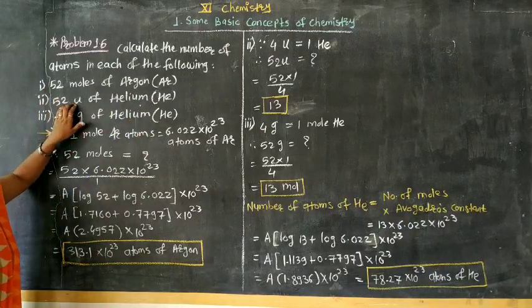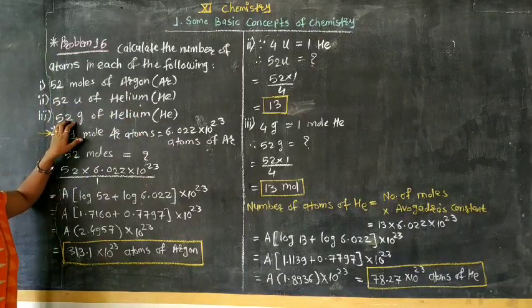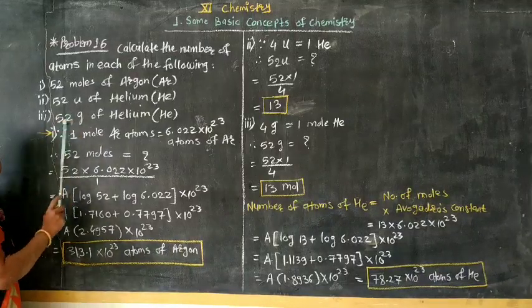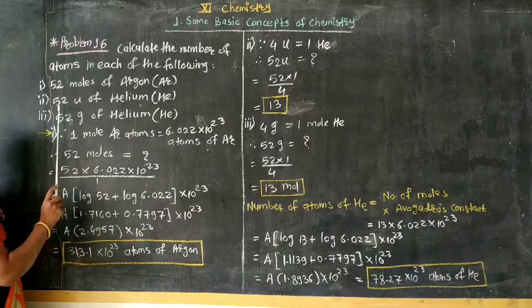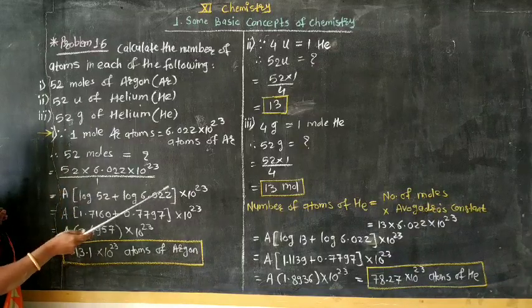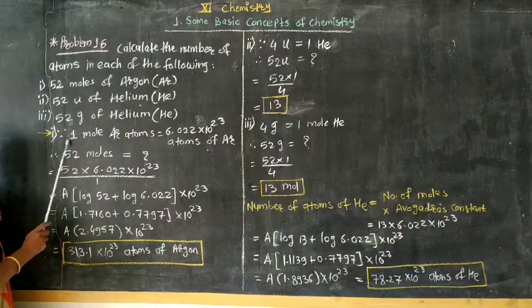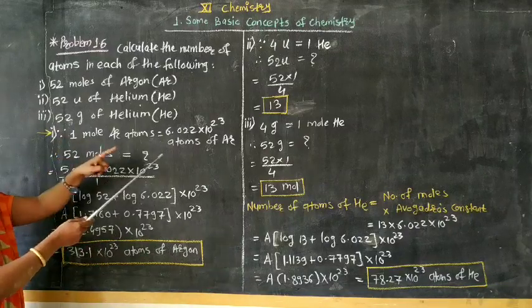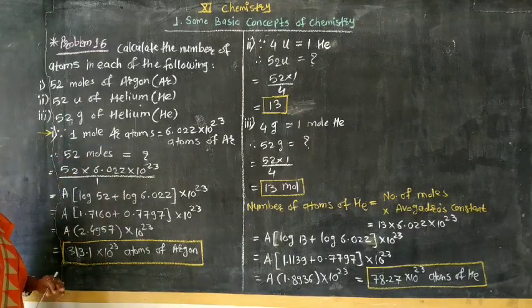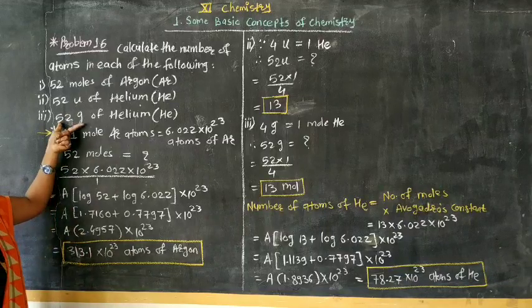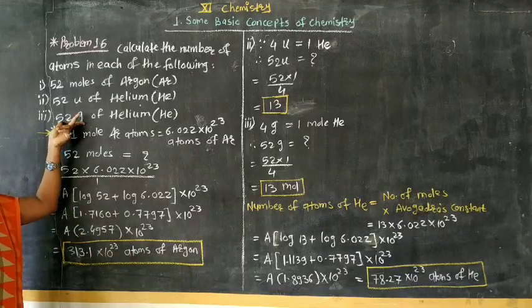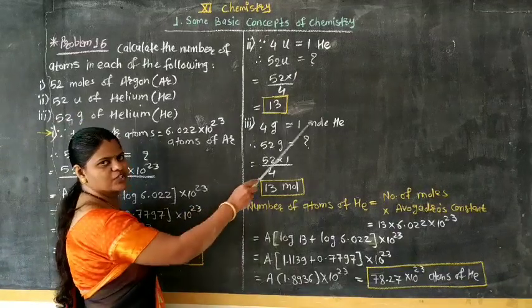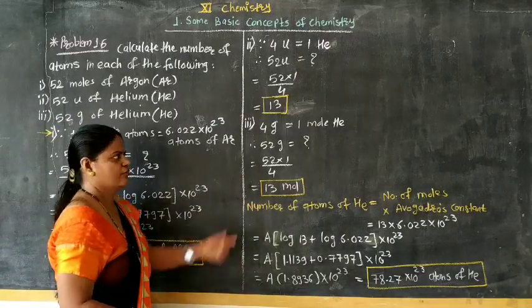But now, whenever that mass is given in gram, at that time first of all convert the gram, given gram atomic mass, into number of moles and then use the same relation as like this: mole to molecule. 1 mole corresponds to Avogadro's number of molecules. So first of all, we have to find out number of moles for 52 gram. How? It is 4 gram of helium corresponds to 1 mole.